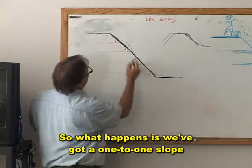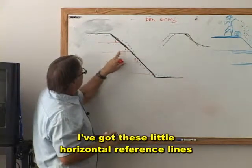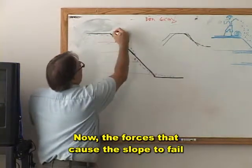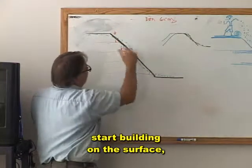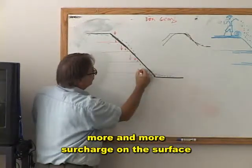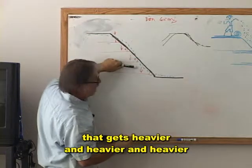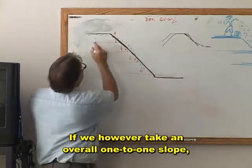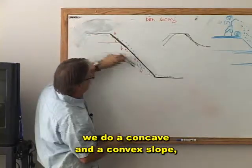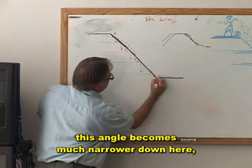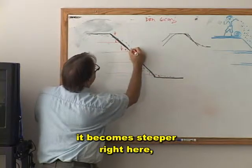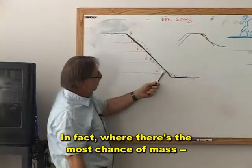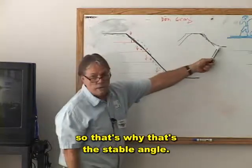We've got a one-to-one slope, and to show stability I have these little horizontal reference lines with our phi angles described on the slope. The forces that cause this slope to fail start building on the surface — more and more weight, more surcharge — it gets heavier and heavier, and the phi angle has not changed. So a lot of times we get slope failures down near the bottom. However, if we take that overall one-to-one slope and do a concave and convex slope, these angles change: the angle becomes much narrower down here, steeper in the middle, and very narrow at the top. Where there's the most chance of mass failure, there's less angle — that's why that's the stable configuration.